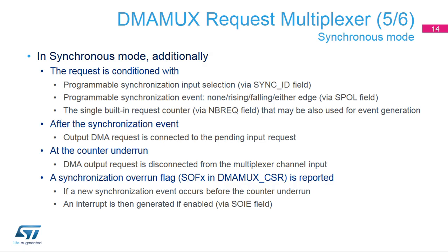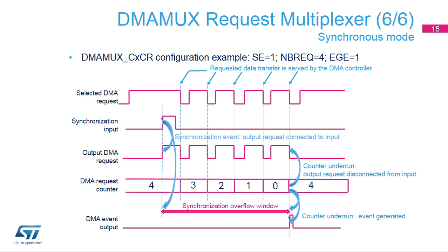In synchronous mode, additionally, the request is conditioned with a programmable synchronization input selection via the SyncID field, a programmable synchronization event — none, rising, falling, or either edge via the SPOL field — and the single built-in request counter via the NBREQ field that may also be used for event generation. After the synchronization event, the output DMA request is connected to the pending input request. At counter underrun, the DMA output request is disconnected from the multiplexer channel input. A synchronization overrun flag (SOFX) in DMA MUX CSR is reported if a new synchronization event occurs before the counter underrun, or an interrupt is generated if enabled via the SOIE field.